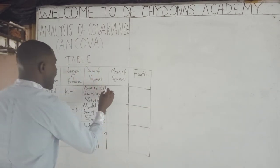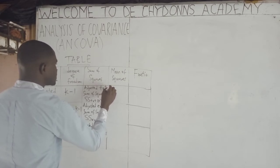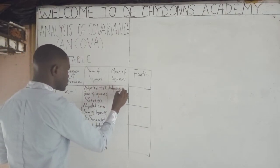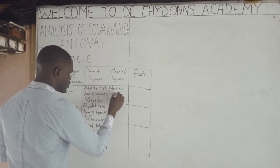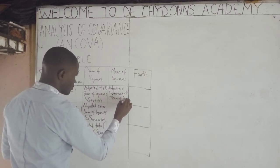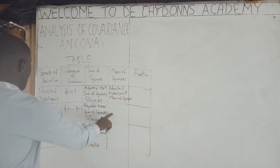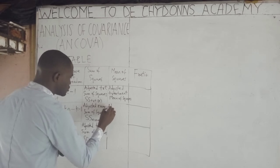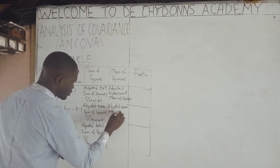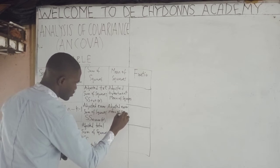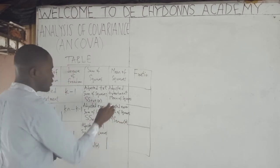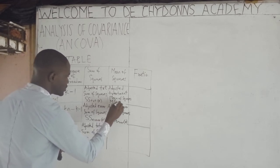For mean of squares, we have adjusted treatment mean of squares — MS-Treatment-A — and the adjusted error mean of squares, which is MS-A.